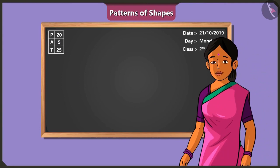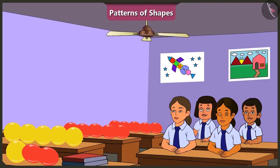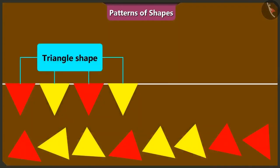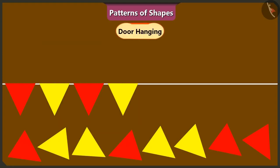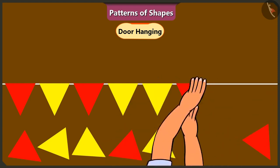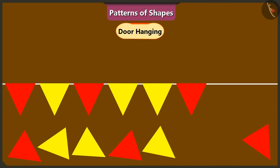Children, Diwali is approaching soon. So do you remember what you have to do? Yes Ma'am, we have to decorate our class. Absolutely correct. I have a toren — a decorative door hanging in the shape of a triangle. Vinny and Binny, both of you will complete this toren in this pattern. Keep putting glue on the triangles and I will keep pasting them. Look at this toren carefully — the triangle shapes have been put together in a special pattern. These are patterns of shapes.